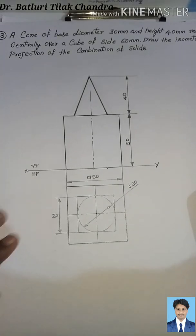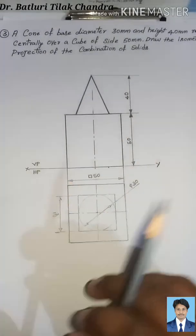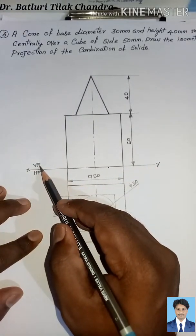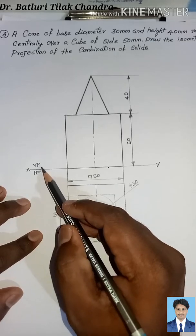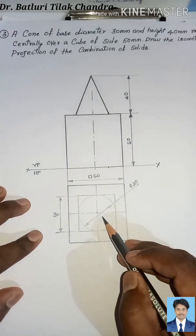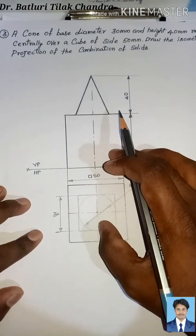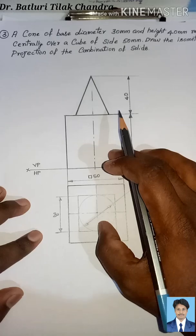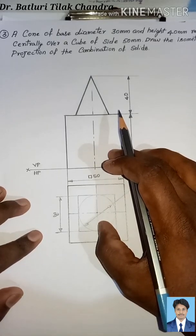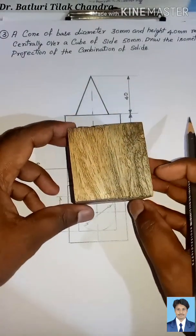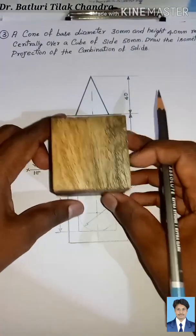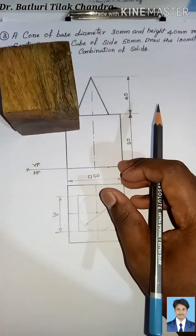Now let us see the orthographic view of the cone and the cube. We can see the XY line - above the XY line is VP, below the XY line is HP. VP is always seen from the front and HP is always seen from the top. In the orthographic view, the cone is placed centrally over the cube. You can see the cube with all sides equal.